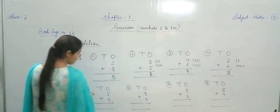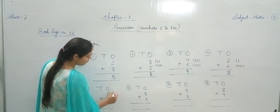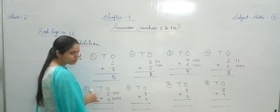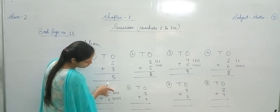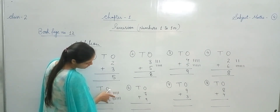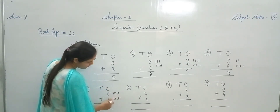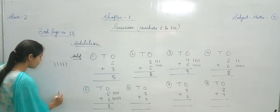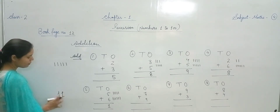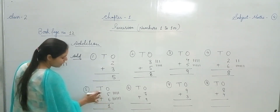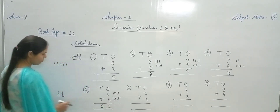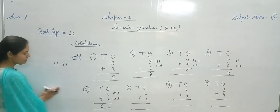Next — 5 plus 6. 5 lines draw करते हैं, फिर 6 lines. Total lines count करते हैं — 1, 2, 3, 4, 5, 6, 7, 8, 9, 10, 11. 5 plus 6 makes 11. अब 11 में 2 digits हैं — 1 and 1. तो एक digit Ones column में लिखनी है, और next वाली digit T यानि Tens column में। So 1 and 1 makes 11.